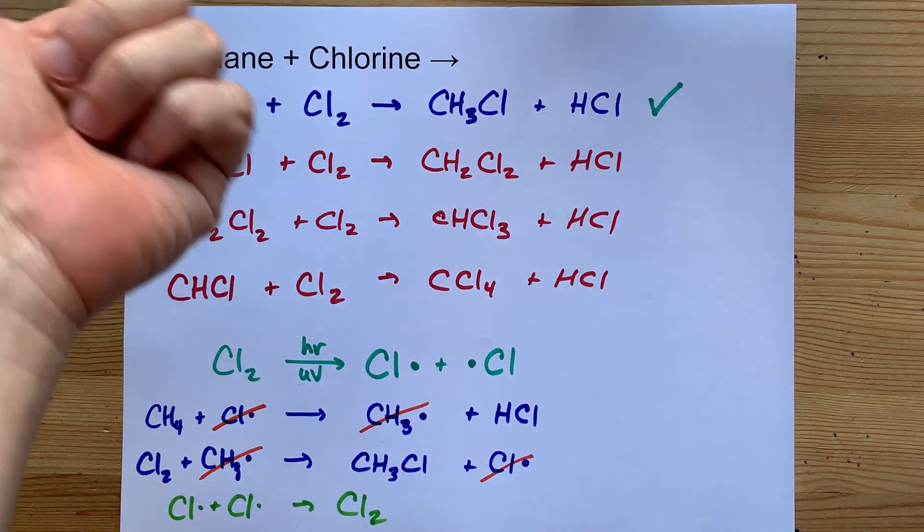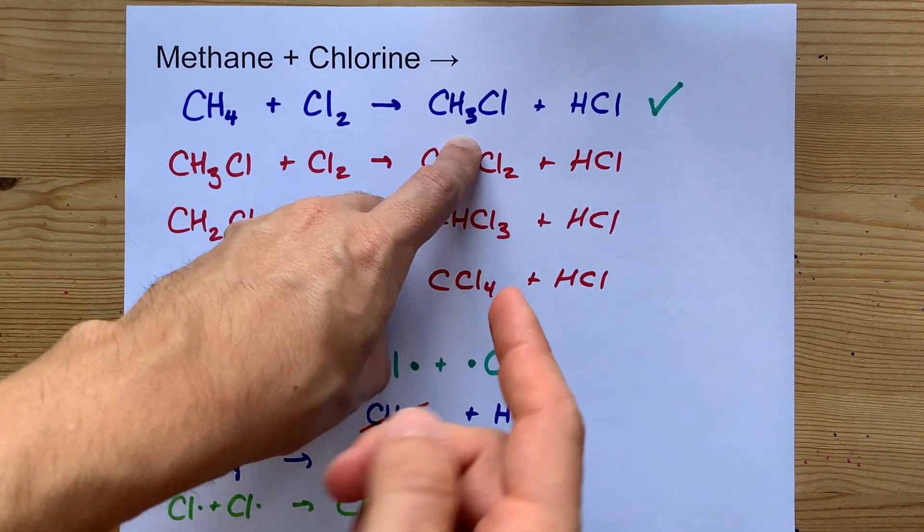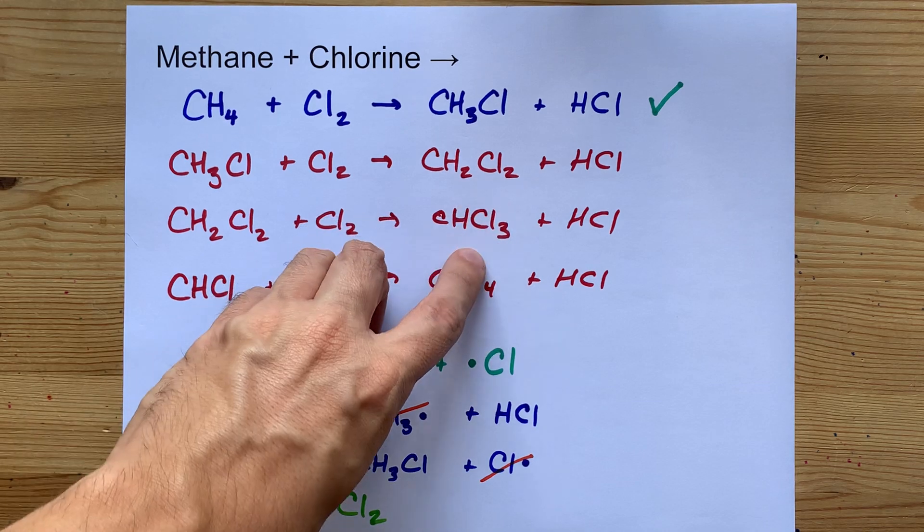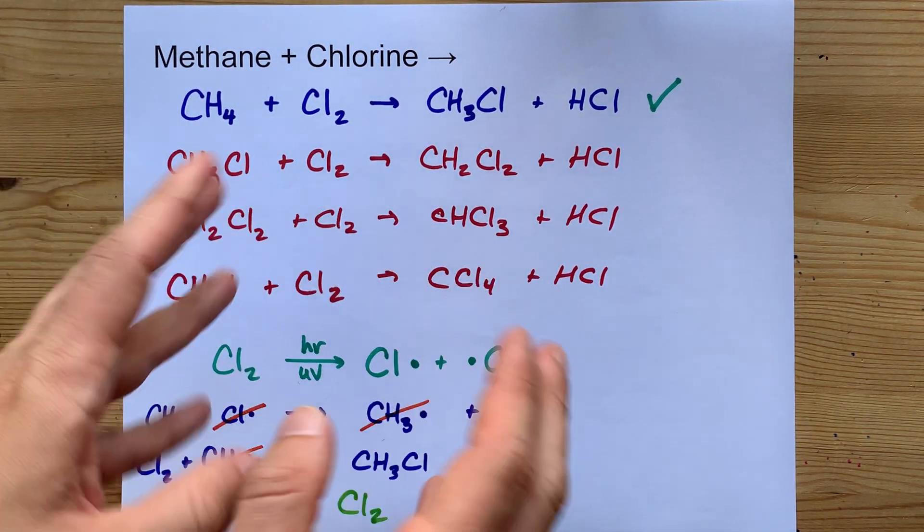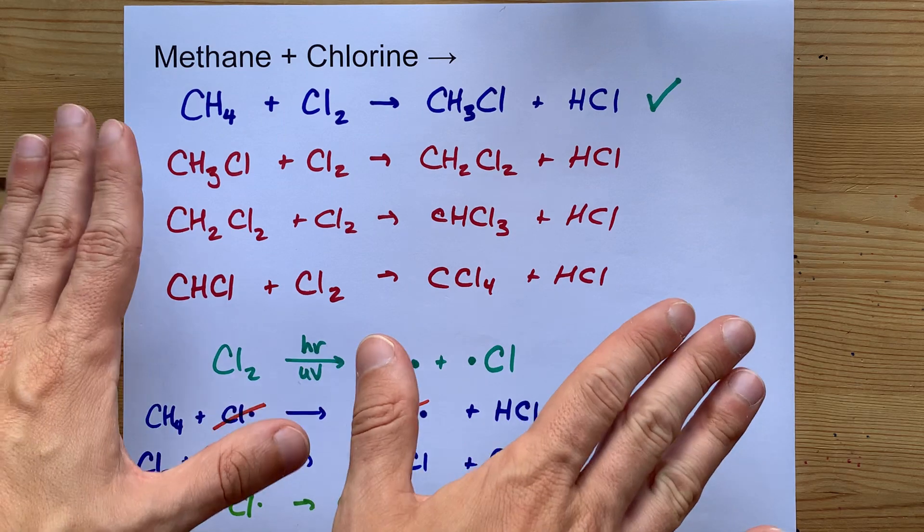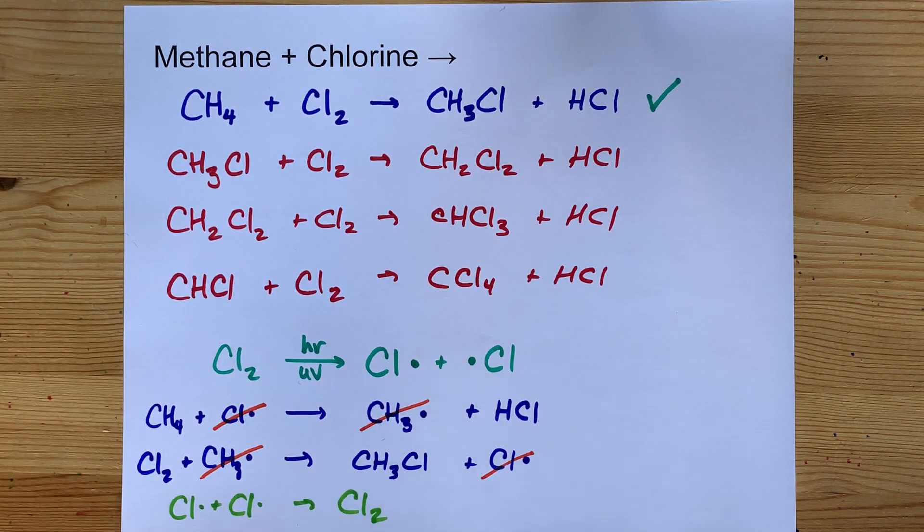Methane and chlorine make methyl chloride and then also dichloromethane, trichloromethane, tetrachloromethane, depending on how much you have around. Best of luck.